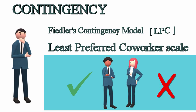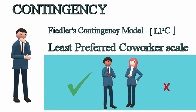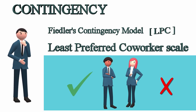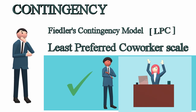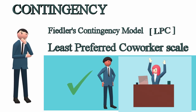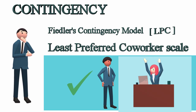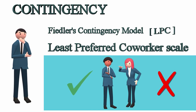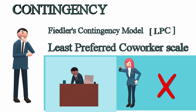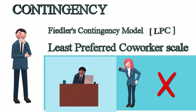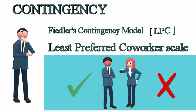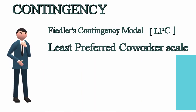Instead, placing the right people in the right situation, or changing the situation to suit an individual, is important to increase a leader's effectiveness. These situational variables are: leader-member relations, or how well managers and their subordinates get along; task structure and complexity of the task; and position power — how much authority the organization has delegated to the manager to direct, reward, or punish employees.